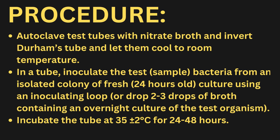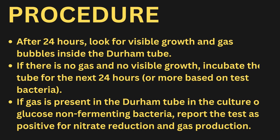Procedure: Autoclave test tubes with nitrate broth and an inverted Durham's tube, and let them cool to room temperature. Inoculate the test bacteria from an isolated colony or a fresh culture using an inoculating loop, or add two to three drops of broth containing an overnight culture of the test organism. Incubate the tube at 35 ± 2°C for 24 to 48 hours. After 24 hours, look for visible growth and gas bubbles inside the Durham tube.